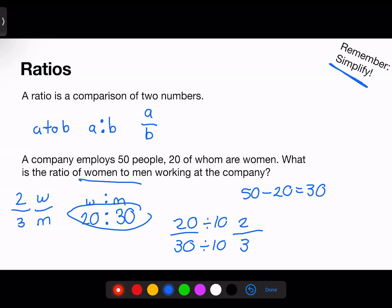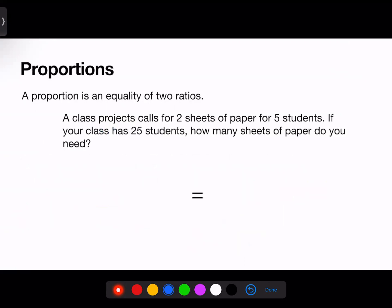Next, let's define a proportion. A proportion is an equality of two ratios. It's essentially another layer of ratios. Let's take a look at this problem. The class project calls for two sheets of paper for five students. If your class has 25 students, how many sheets of paper do you need? As you can see, the problem gives a ratio: two sheets over five students.